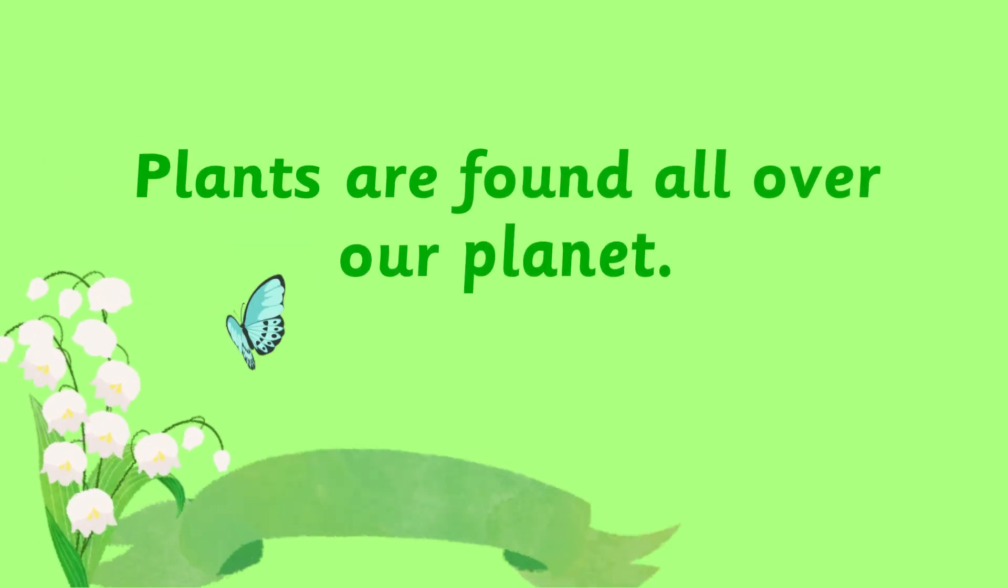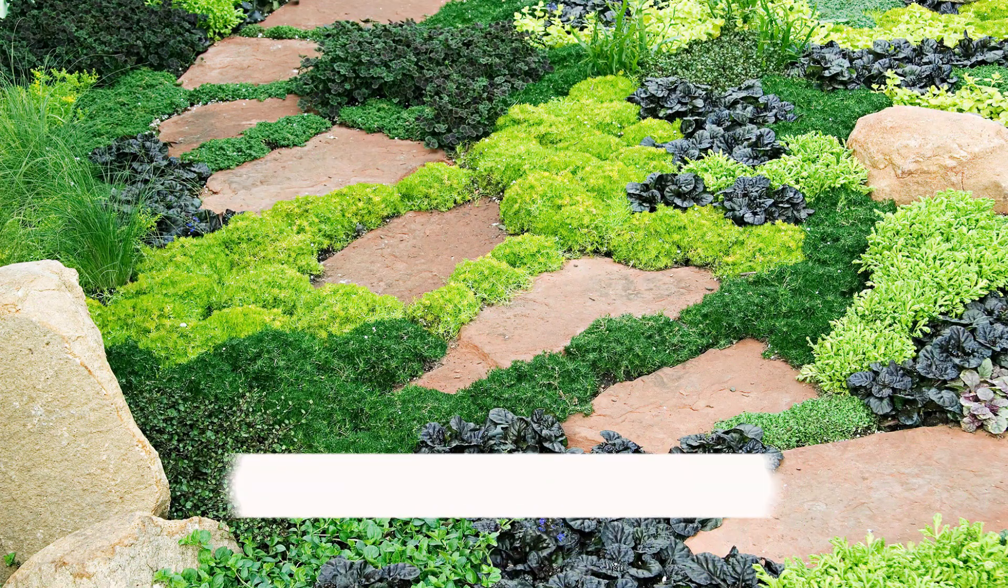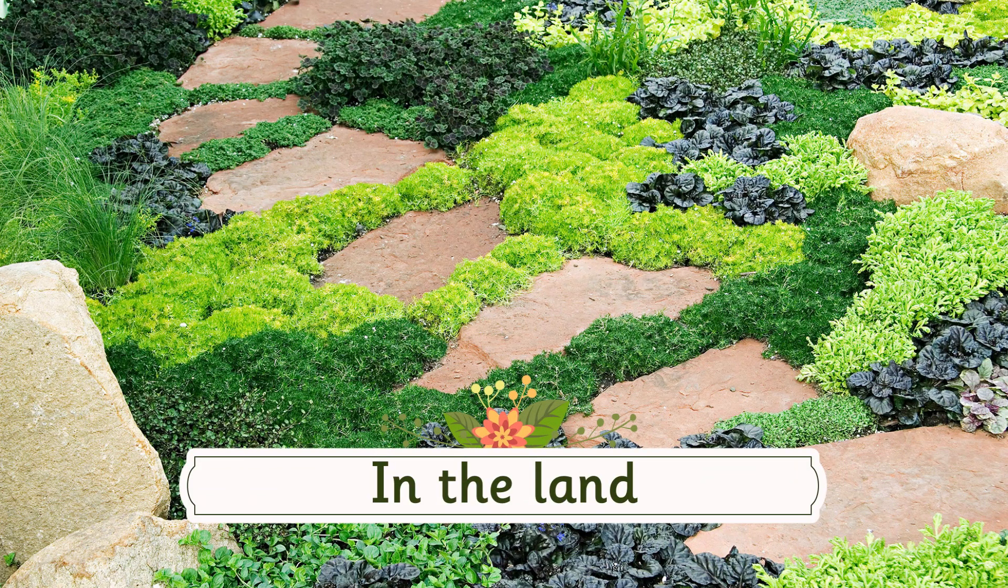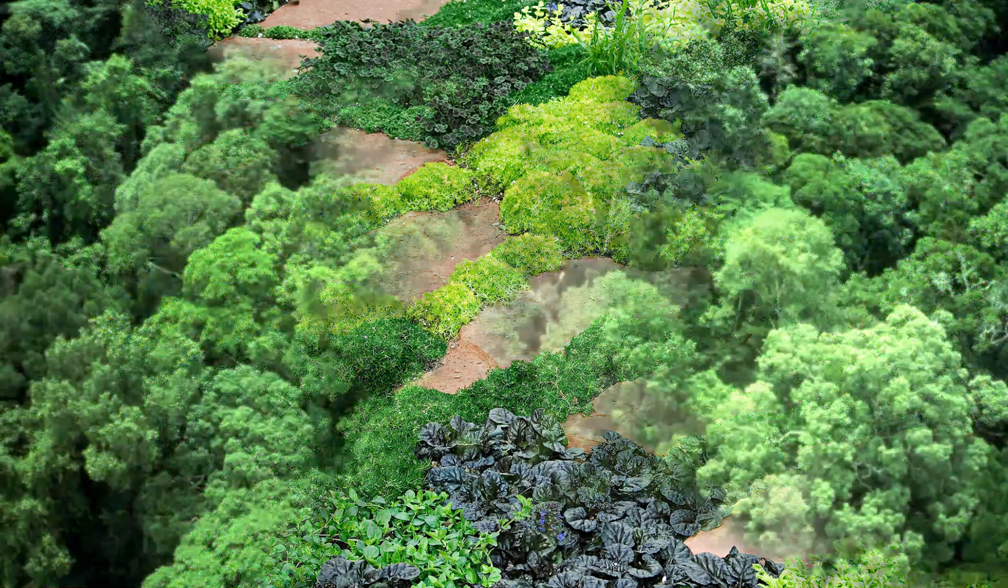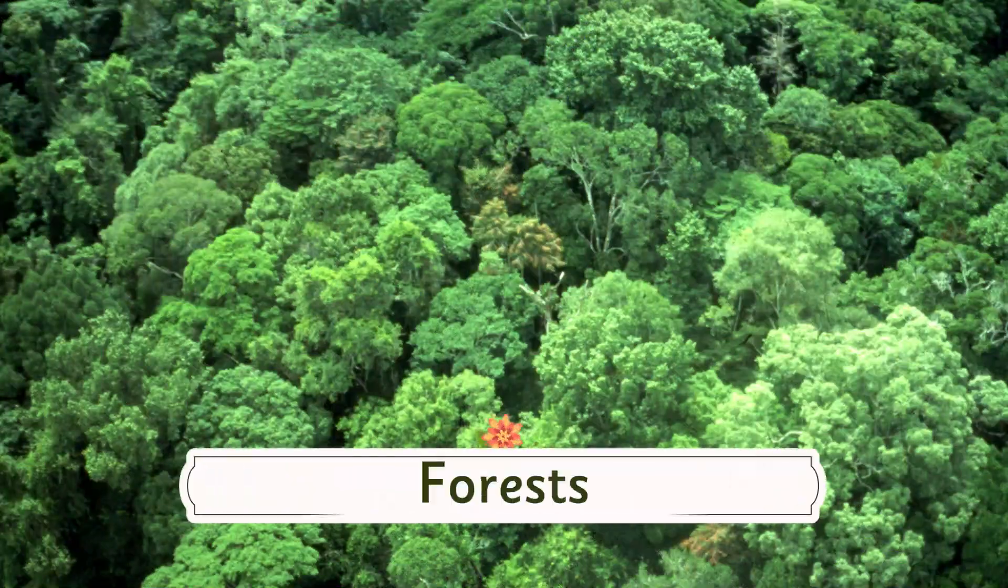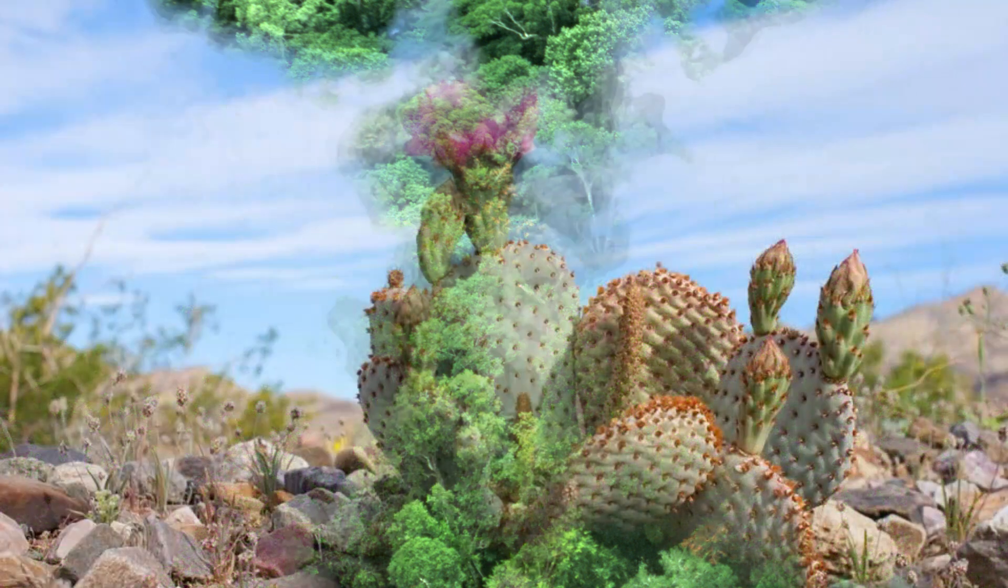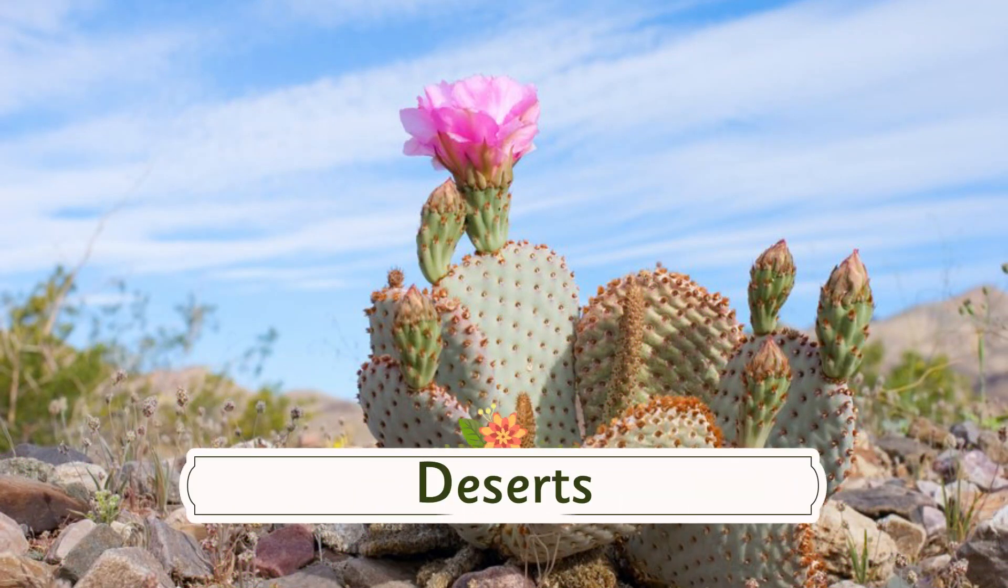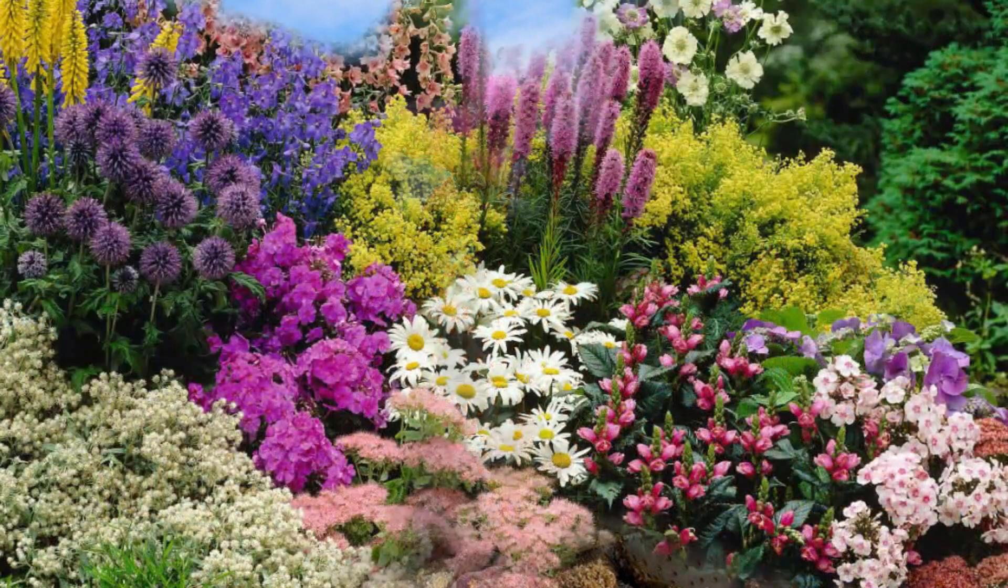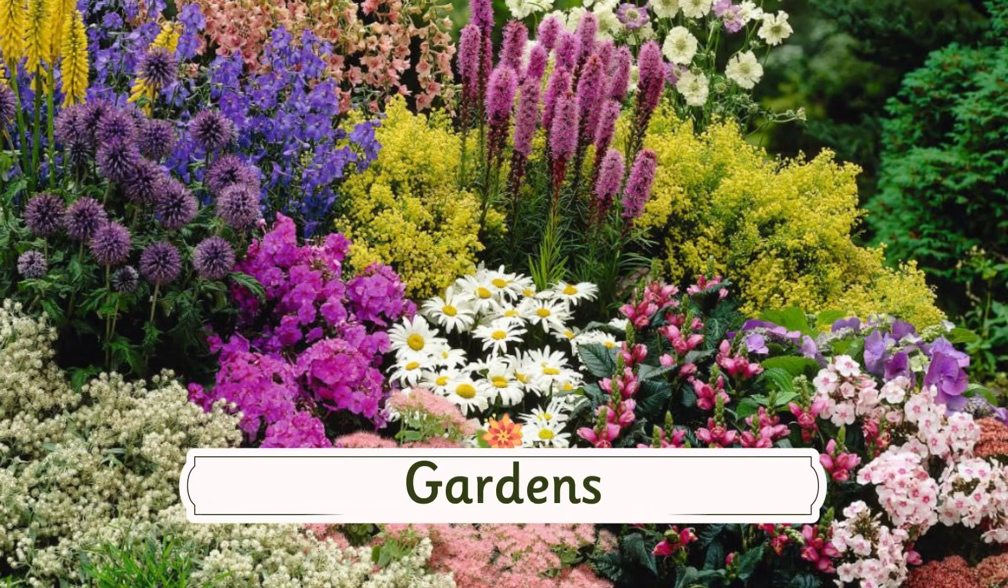Where do plants grow? Plants are found all over our planet. They grow in the land, forests, deserts, and gardens.